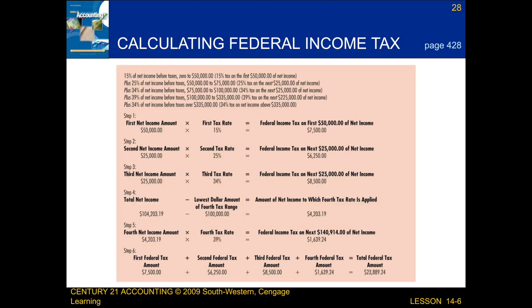The next step is to take the first net income amount and multiply it times the first tax rate, and that will give us the federal income tax on the first $50,000 of net income. After that, we take the second net income amount and multiply it times the second tax rate, and that will give us the federal income tax on the next $25,000 of net income. Following that, we take the third net income amount and multiply it times the third tax rate, and that will give us the federal income tax on the next $25,000 of net income.